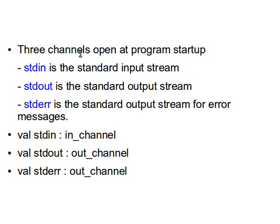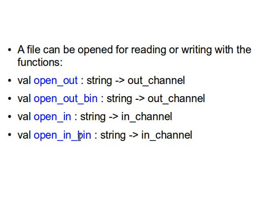We have three channels that are automatically open at program startup: stdin (standard input stream), stdout (standard output stream), and stderr for the output stream for error messages. Standard in is of type in_channel, stdout of type out_channel, and stderr of type out_channel again. We also have several functions to read and write from and to files.